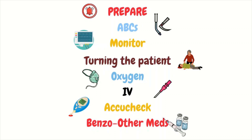Things that need to occur while your patient is actively seizing include placing them on oxygen — commonly a non-rebreather since it's easy to put on — getting IV access so medications can be given, turning the patient, getting them on the monitor, checking a blood sugar, and giving a medication to stop the seizure, with the usual front-line agent being a benzodiazepine. You should also be noting what time the seizure started and keeping track of the length.